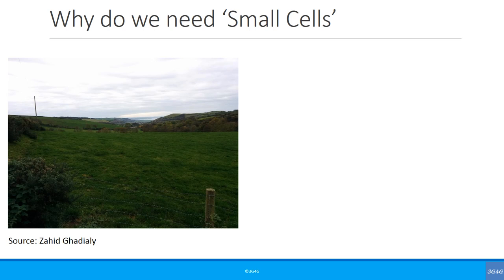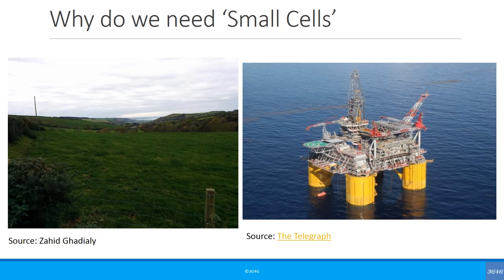Rural areas with very few people may be far from the macro site, in the shade of a hill, or in a dip, meaning they get no macro coverage. Small cells can serve these people. For remote connectivity — like an oil rig far offshore that doesn't get coverage from a coastal macro — a small cell can provide coverage to the people and equipment on that oil rig.